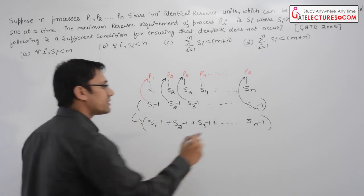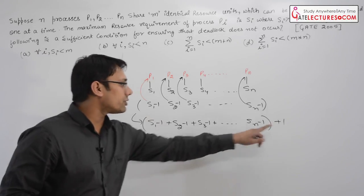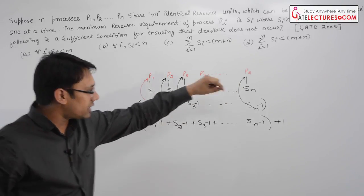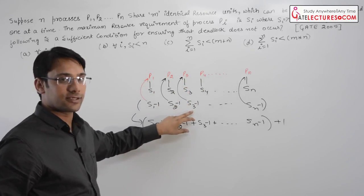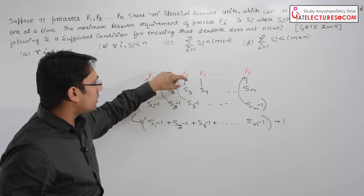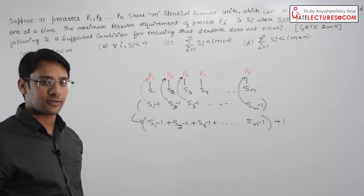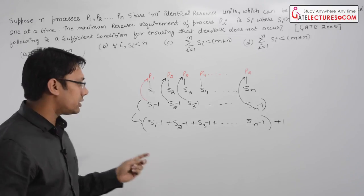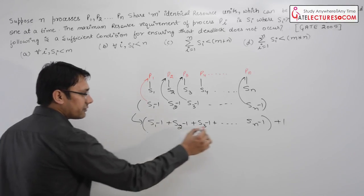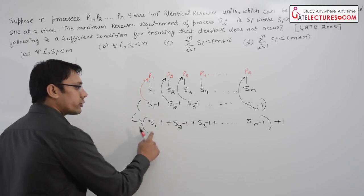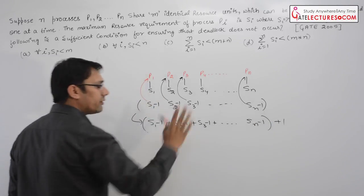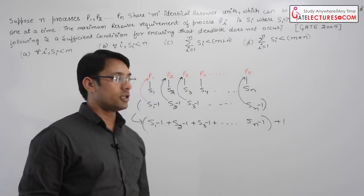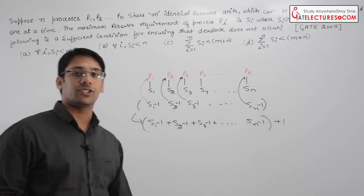But if we have just one more resource and add it to this total, we can allocate that one extra resource to process P1, P2, P3, or any one of the processes. That process will then finish its execution, release all its held resources, and those released resources can be given to other processes — hence deadlock is avoided. So if we give one more resource than the worst-case total, that is sufficient to ensure no deadlock.